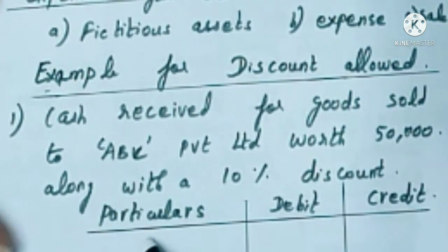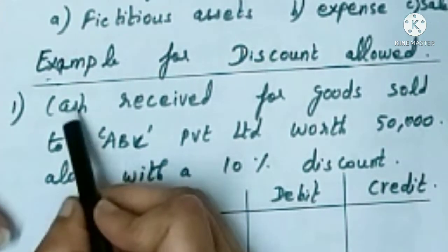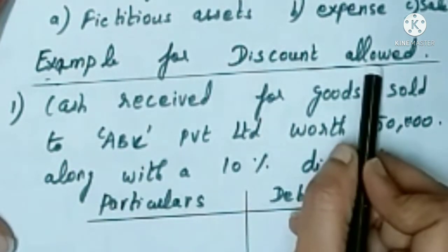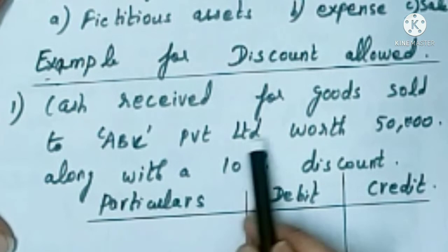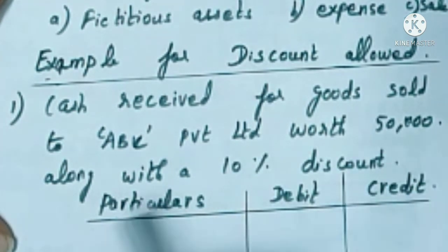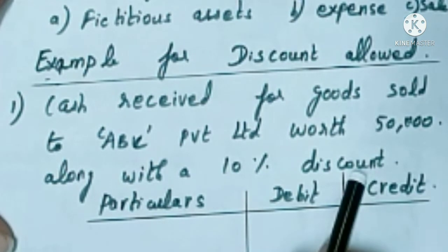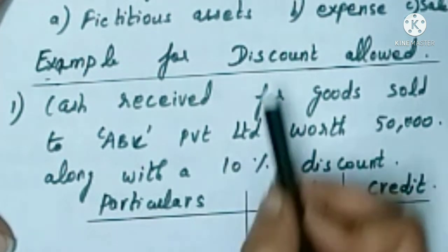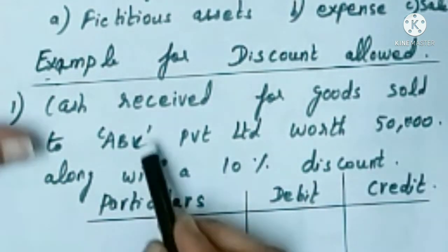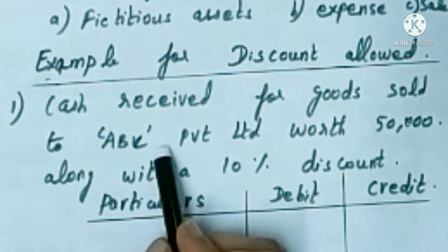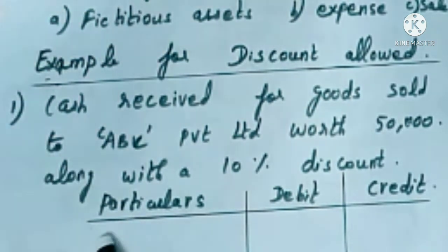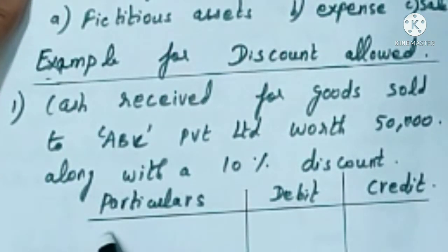Now let's see this problem — example for discount allowed. Cash received for goods sold to ABC Private Limited worth rupees 50,000, along with a 10% discount. What is the journal entry for this? The entry will be cash account debited. We are debiting cash because we are receiving cash — debit what comes in. So we have to debit cash account.